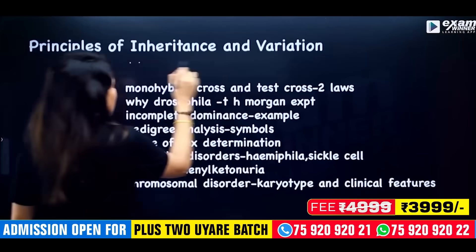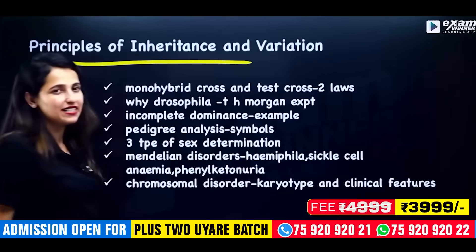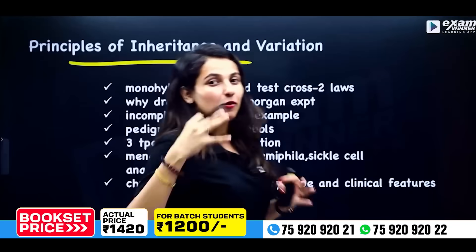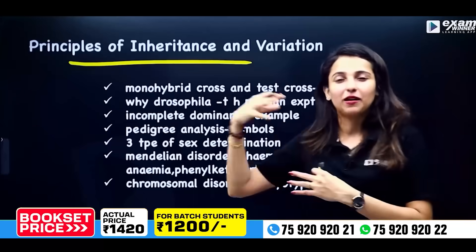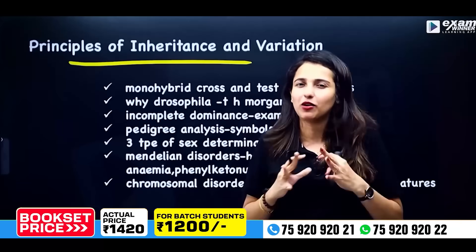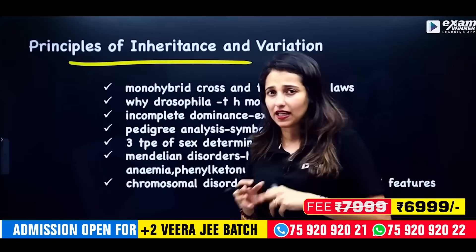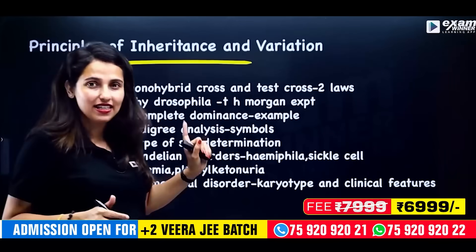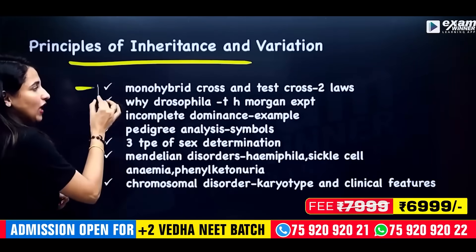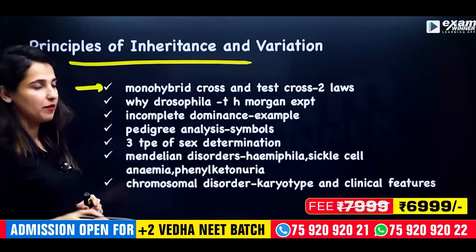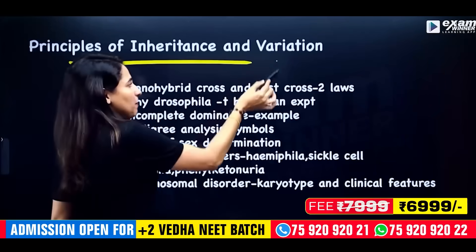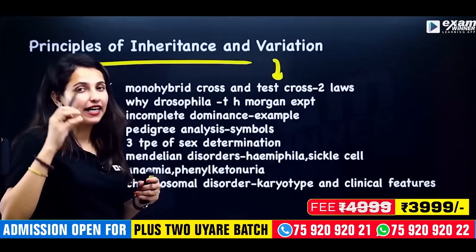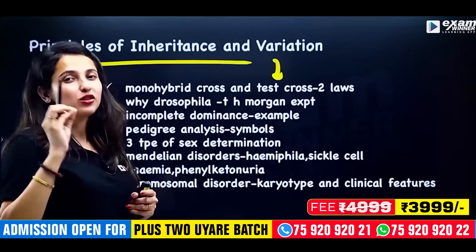Our sixth chapter is Principles of Inheritance and Variation, with a little introduction from the Molecular Basis of Inheritance chapter. This chapter is very important. Mono-hybrid cross, test cross. Why Drosophila? T.H. Morgan.